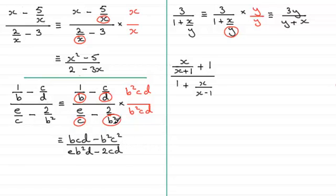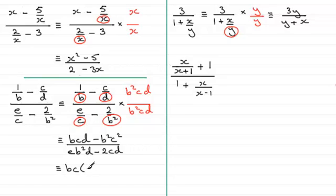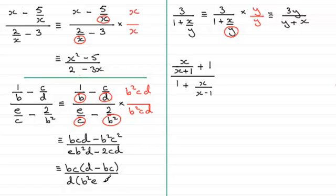So with this one I only needed to pick b squared because b went into b squared — I didn't need b cubed. Now it looks better if I check whether I can factorise the top and bottom. On the top I've got a common factor of bc, so I pull bc out, leaving d minus bc. The denominator has a common factor of d, leaving d times b squared e minus 2c. So the final answer is bc(d minus bc) all divided by d(b squared e minus 2c).